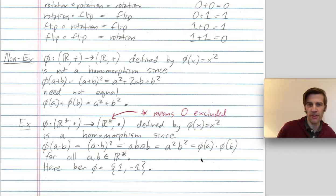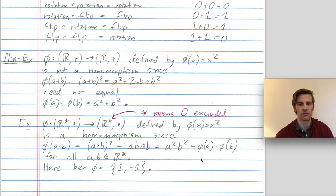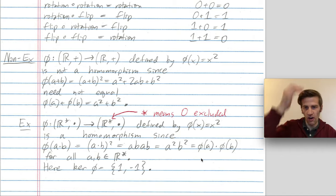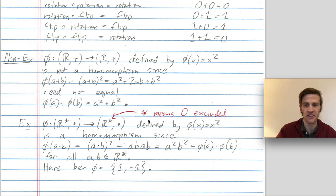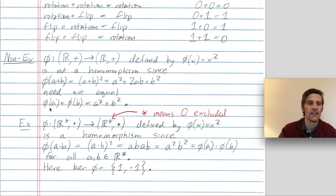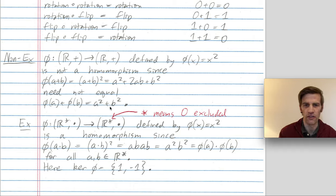Now a non-example. Consider the map phi from the real numbers under addition to the real numbers under addition, defined by phi of x equals x squared. Is this a homomorphism? We'd need phi of a plus b to equal phi of a plus phi of b. But phi of a plus b is (a+b) squared, which equals a squared plus 2ab plus b squared, whereas phi of a plus phi of b is just a squared plus b squared. These are not equal unless one of a or b is zero, so phi is not a homomorphism.